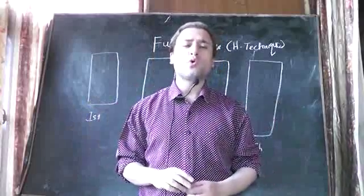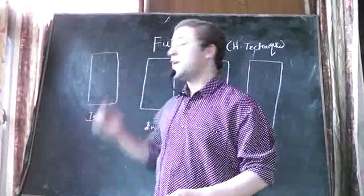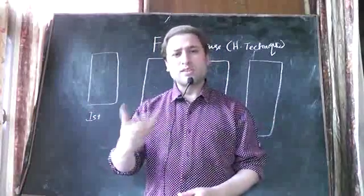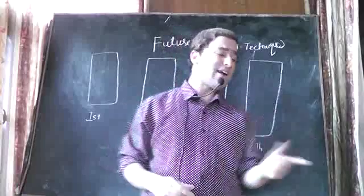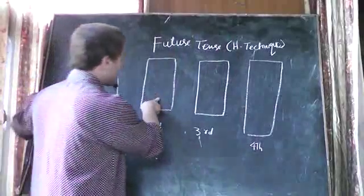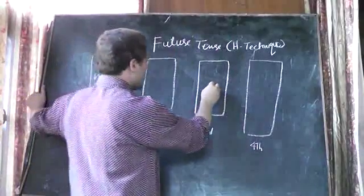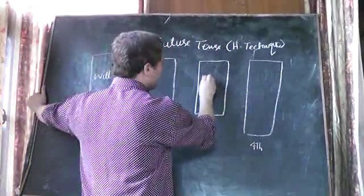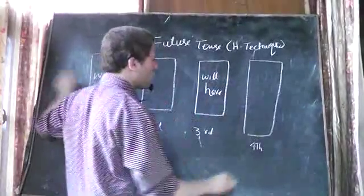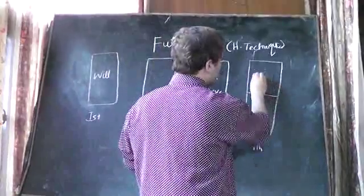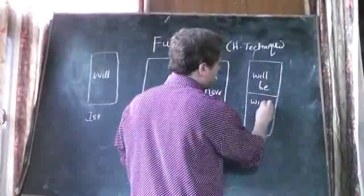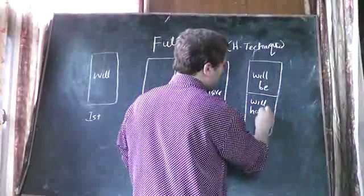Helping verbs are those which help the main verb. In future tense we use 'will' or 'shall'. Let's work with 'will' for the sake of learning first. I will write in the first box: 'will'. The second box is empty. The third box I will fill with 'will have'.